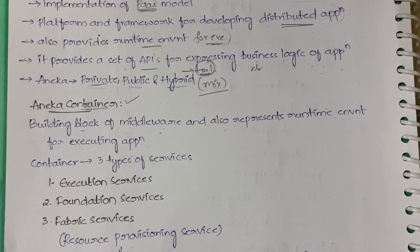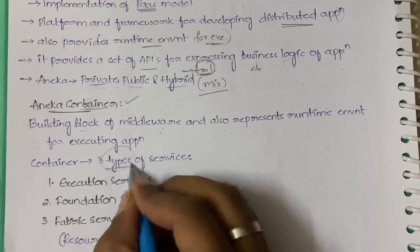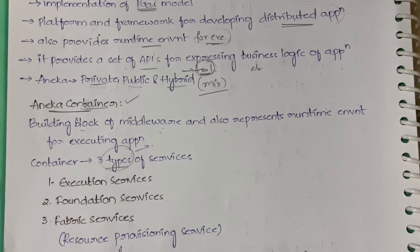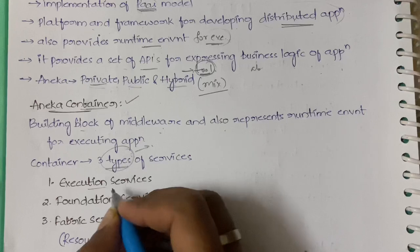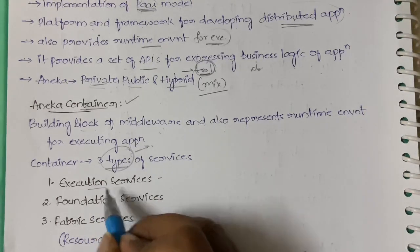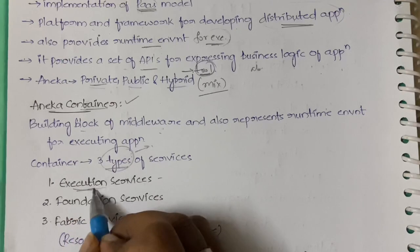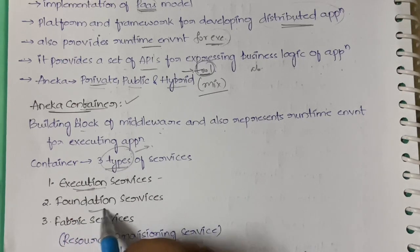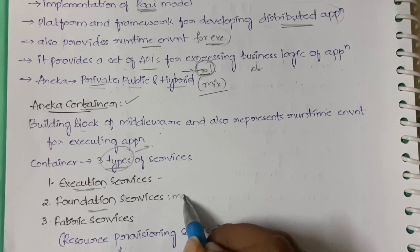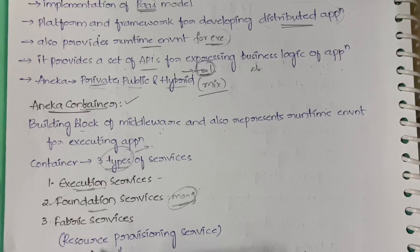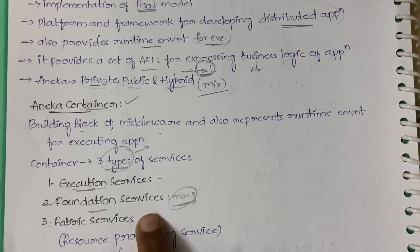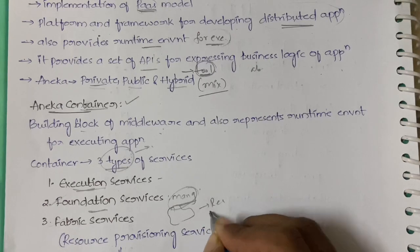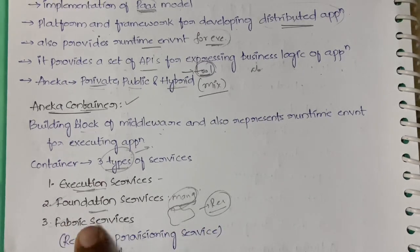This container provides mainly three types of services, which we will see in the Aneka cloud architecture diagram. First, you have Execution Services — all scheduling and execution related services are present here. Second, you have Foundation Services — all management related services are present here. Third, you have Fabric Services — these provide access to the resources managed by the cloud.